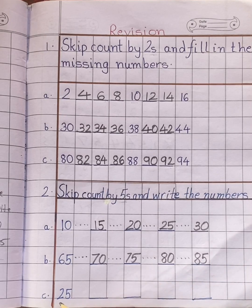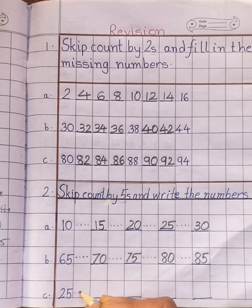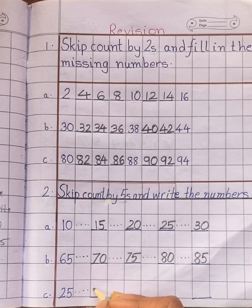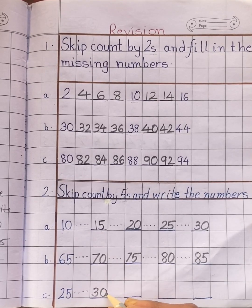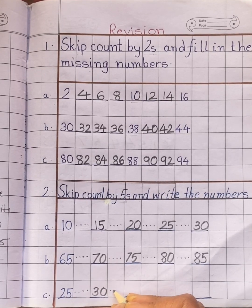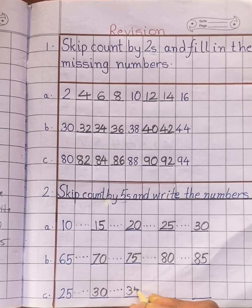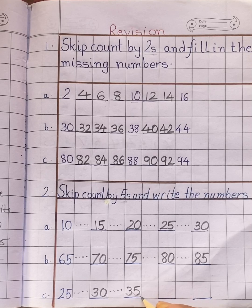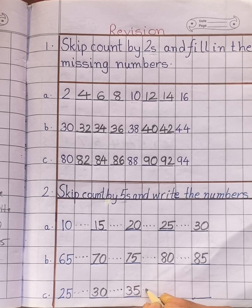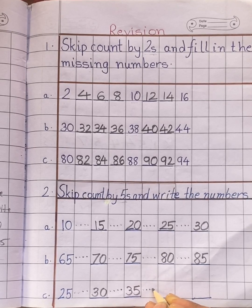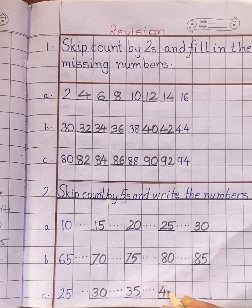The last number is 25. We have to skip four numbers: 26, 27, 28, 29. Write down 30. After 30, we have to skip four numbers: 31, 32, 33, 34. Write down 35. After 35, again we have to skip four numbers: 36, 37, 38, 39. Write down 40.